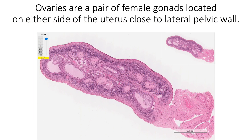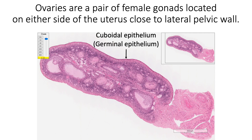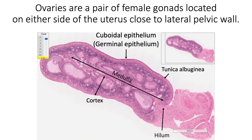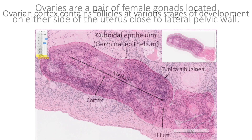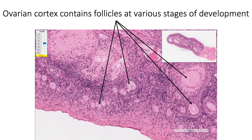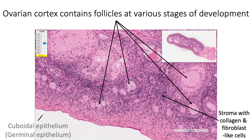Ovaries are a pair of female gonads located on either side of the uterus, close to the lateral pelvic wall. They are covered by a layer of cuboidal epithelium, falsely labelled as germinal epithelium, and beneath this layer there is a layer of connective tissue called tunica albuginea. Ovaries have an outer cortex and a central medulla which receives blood vessels at the hilum. The ovarian cortex contains follicles at various stages of development, as well as stroma with collagen fibres and fibroblast-like cells. Here we are also seeing the magnified cuboidal epithelium, or germinal epithelium, and the tunica albuginea beneath it.